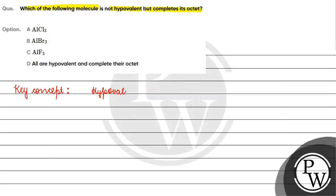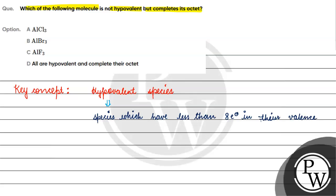What is a hypovalent species? These are species which have less than 8 electrons in their valence shell.